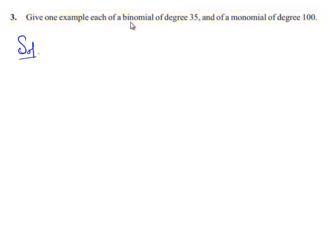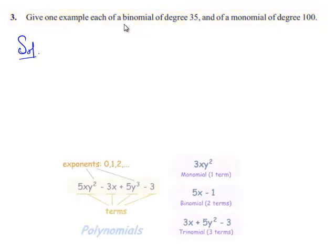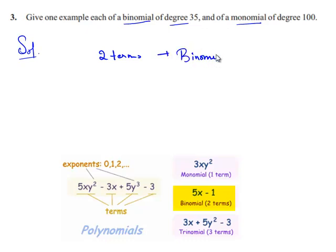First of all, we need to concentrate on the terms binomial, monomial, and degree. A binomial is an algebraic expression containing two terms. A monomial is an algebraic expression containing only one term.